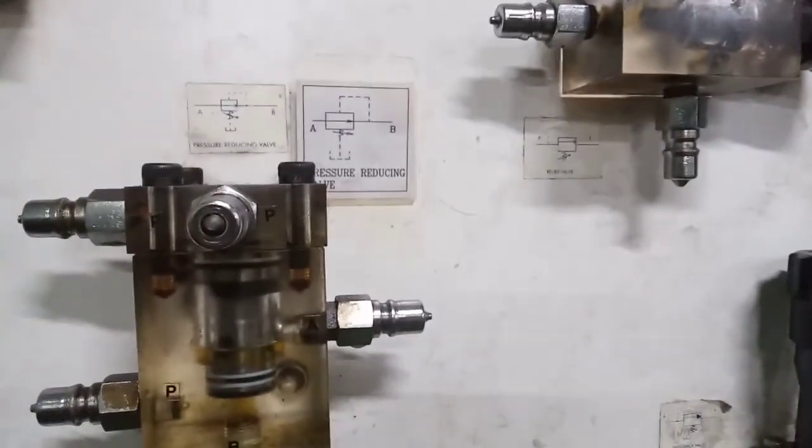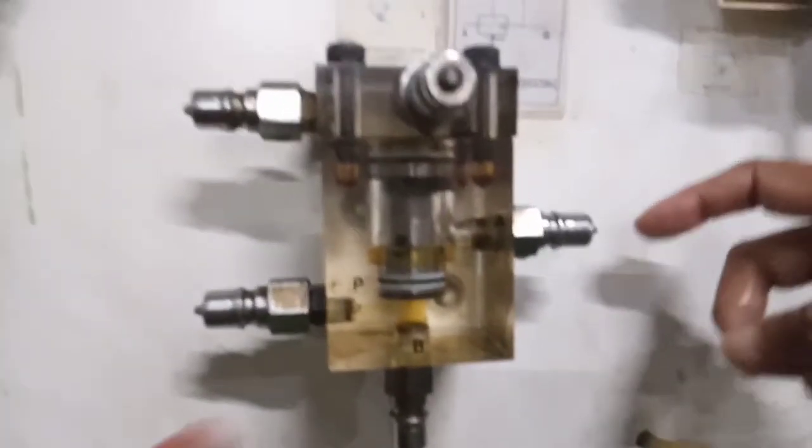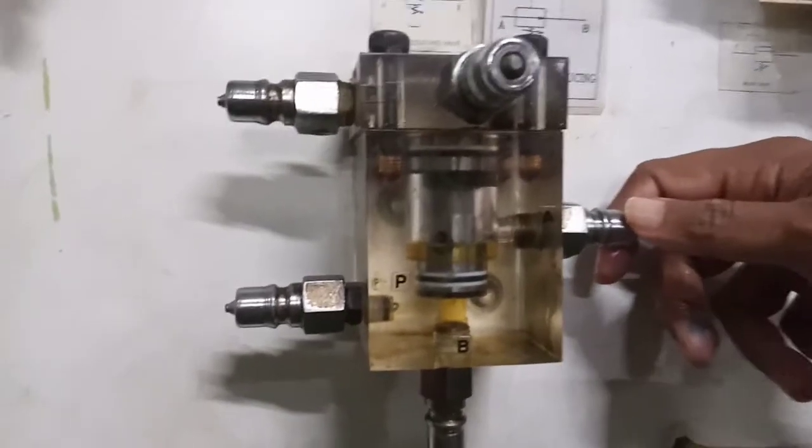Okay. Next is pressure reducing valve here. Show the symbol. So, this is pressure reducing valve. You can see here B, P, P, all these ports are shown here. Right.